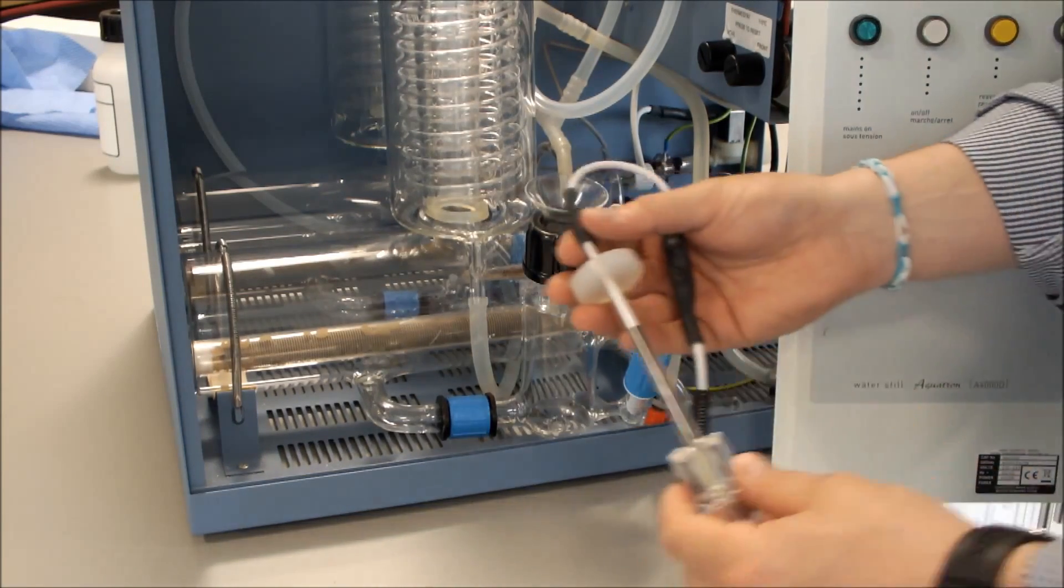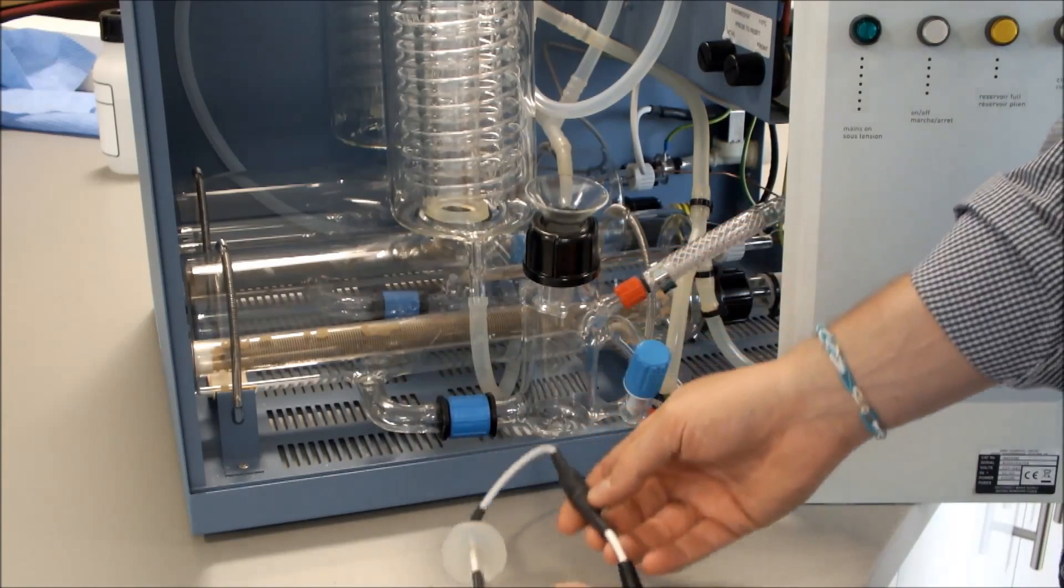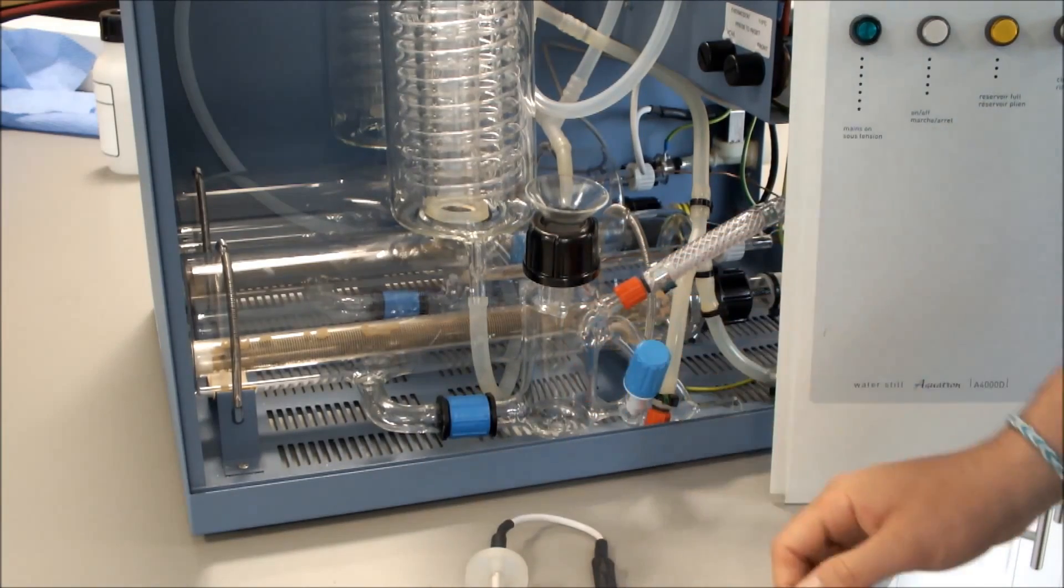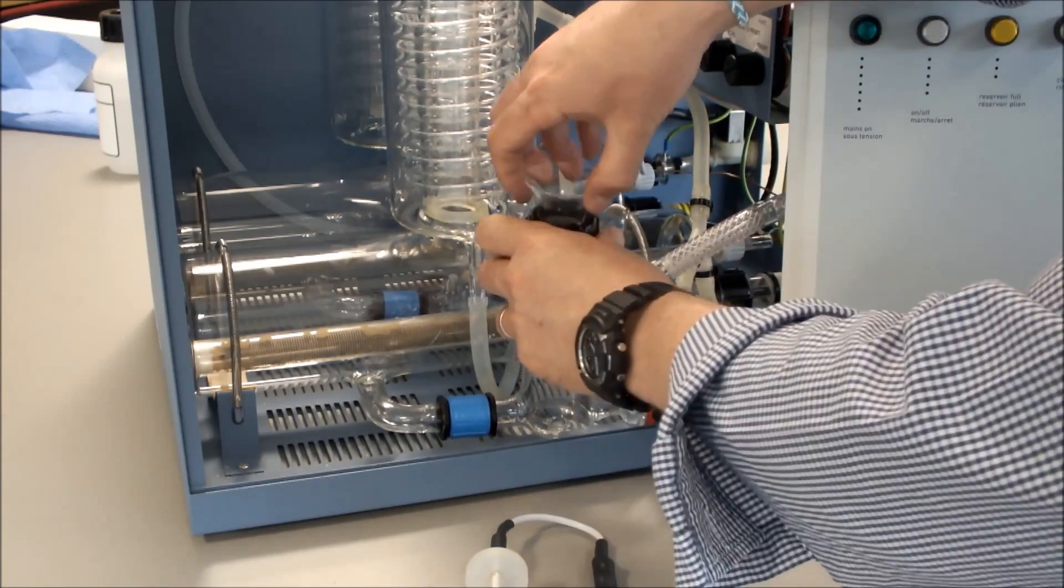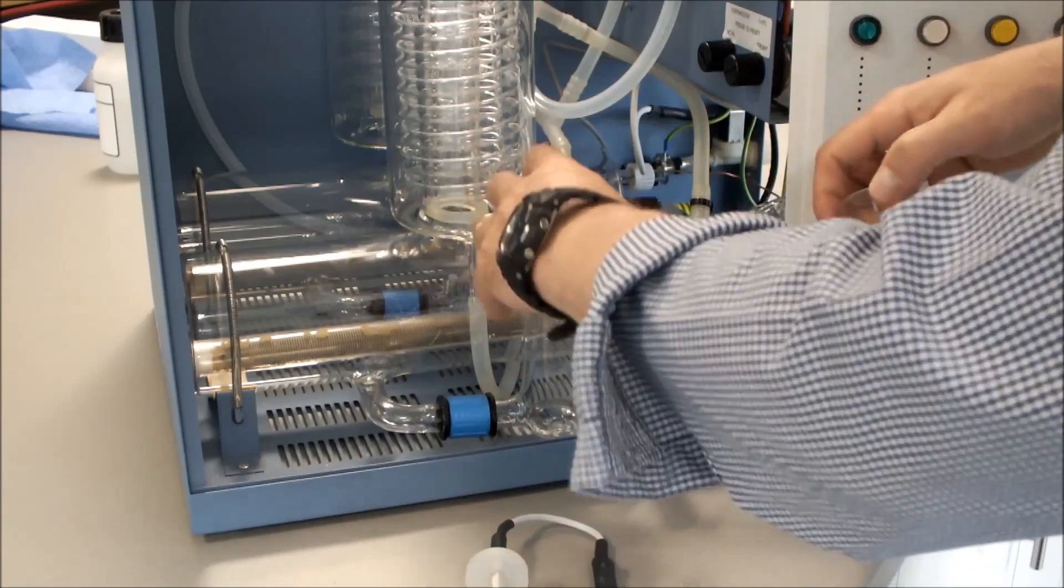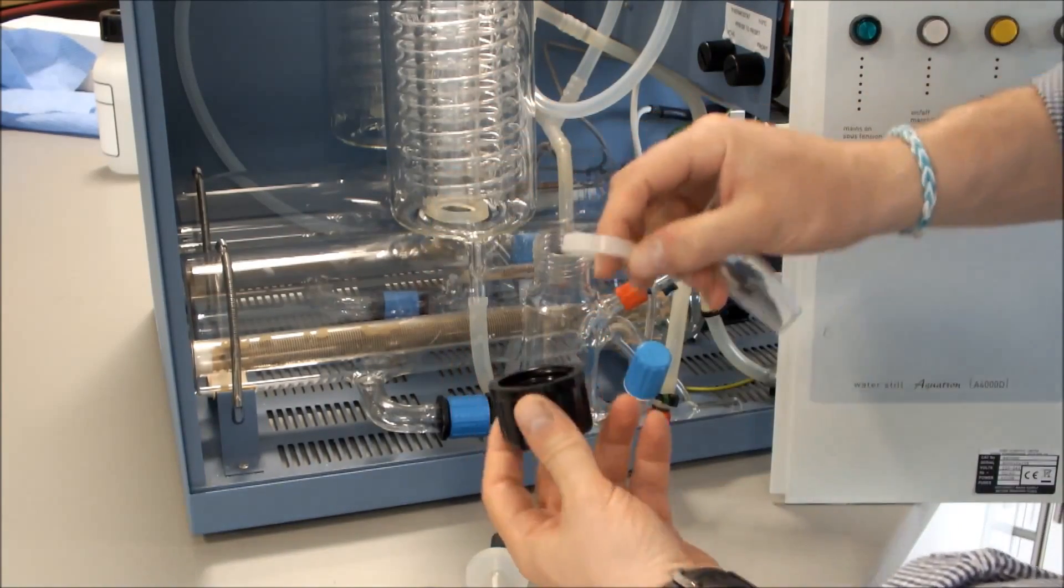We'll now fit our float level assembly to our boiler level control. First of all we undo the black cap, remove the funnel, remove the black cap and the seal.